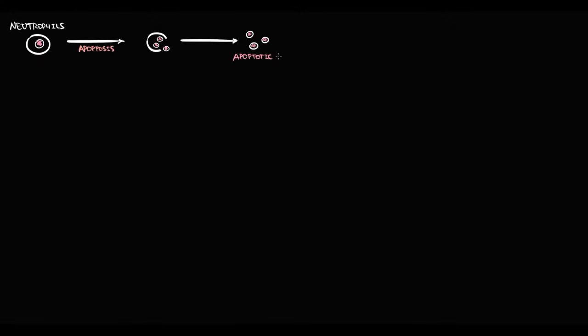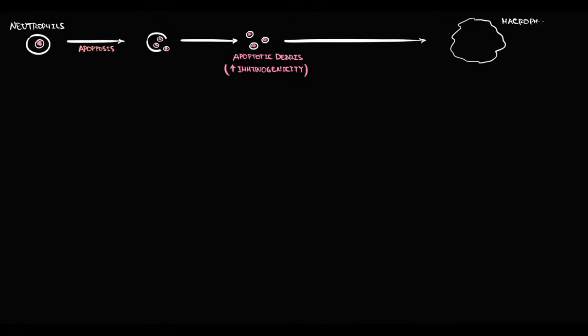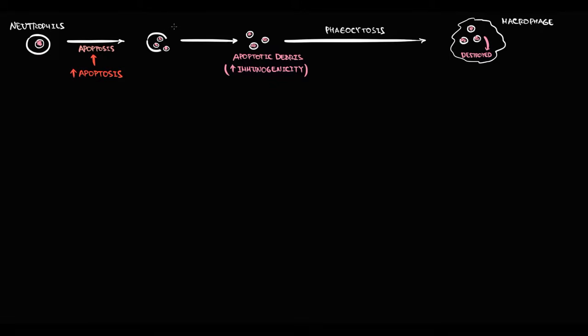Why does lupus develop? Practically all cells in our organism in normal condition die by apoptosis. During apoptosis, the cell membrane and nucleus undergo fragmentation, resulting in formation of so-called apoptotic debris. The major problem with apoptotic debris is high immunogenicity. In normal conditions, nuclear material is contained inside the cell under the nuclear membrane, but with apoptosis, fragmented nuclear material becomes exposed. The solution is to quickly remove this immunogenic material — clearance of apoptotic debris is provided by macrophages that remove and destroy it via phagocytosis.